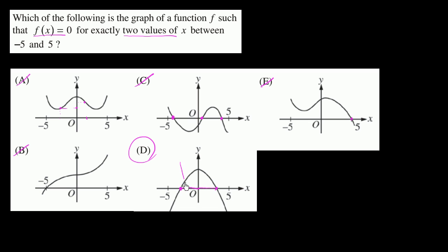Another graph that could have looked like this might have f of x equals 0 there and there. Either way, we'd pick D.